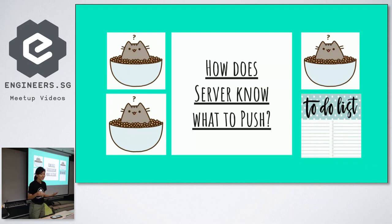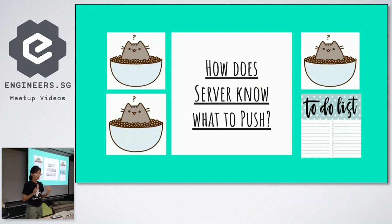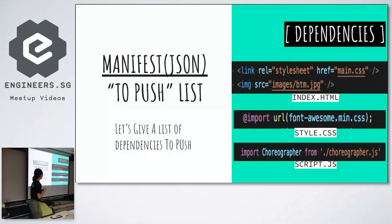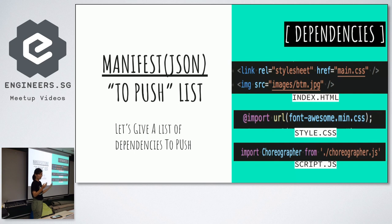It is our job as developers to tell the server which resources it has to push. What we do is provide a manifest file — a to-do list — saying, hey server, please push these resources.